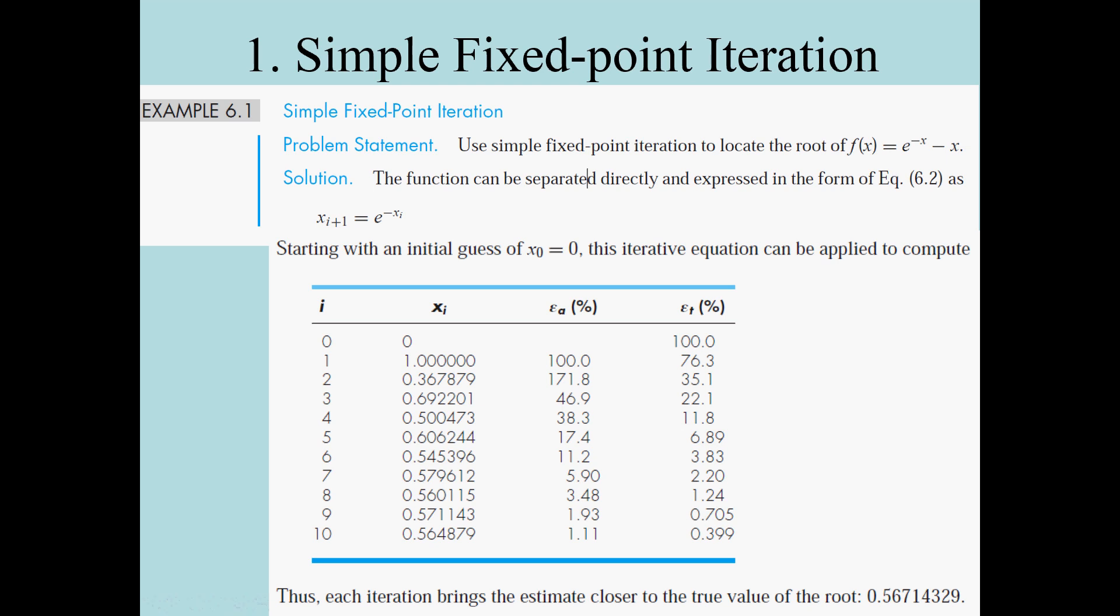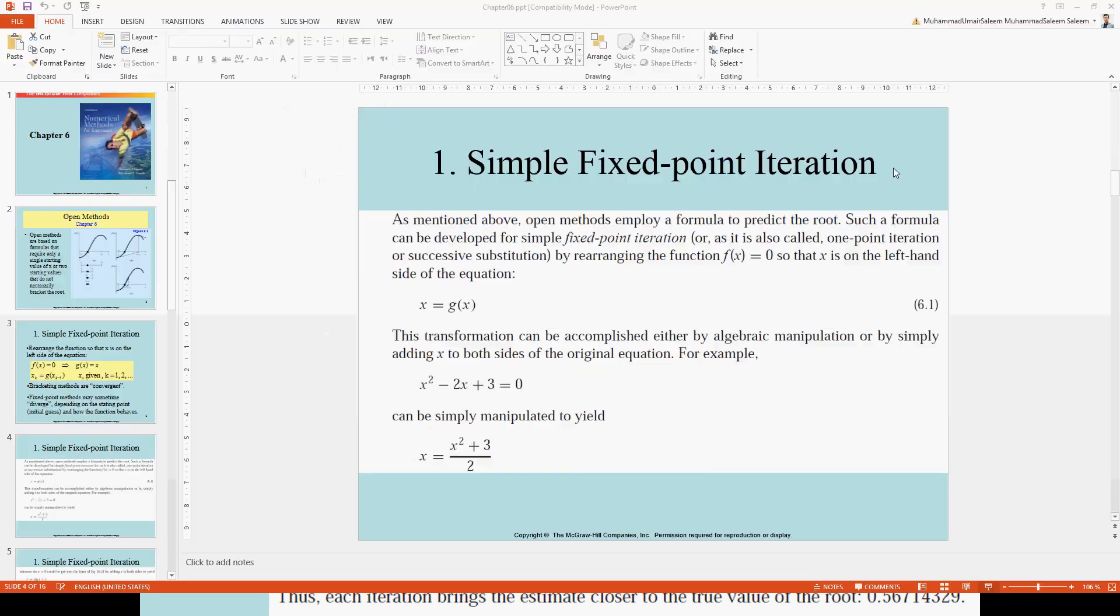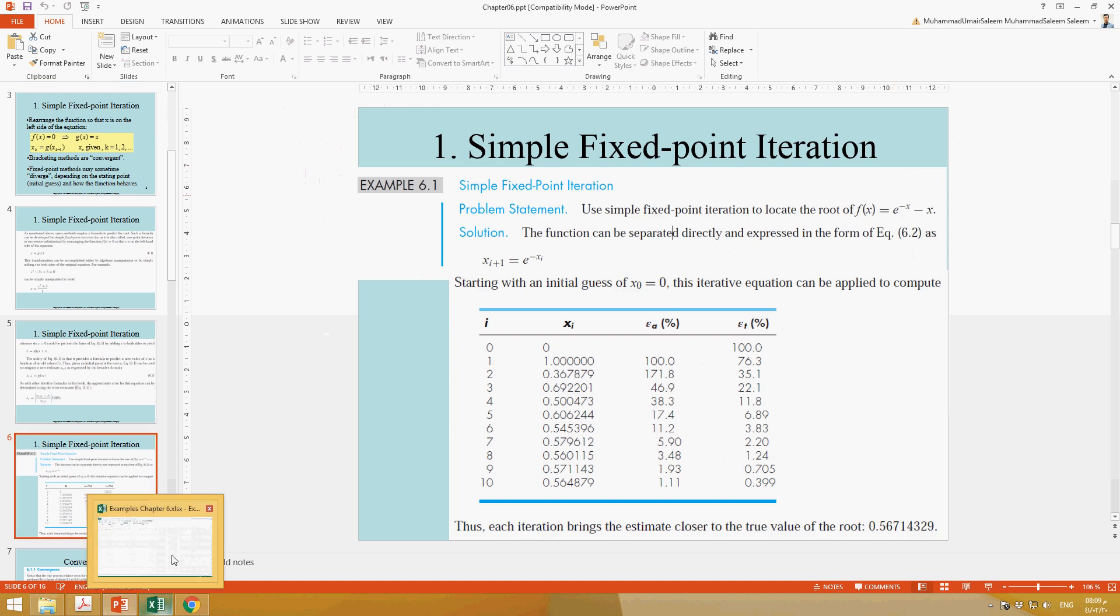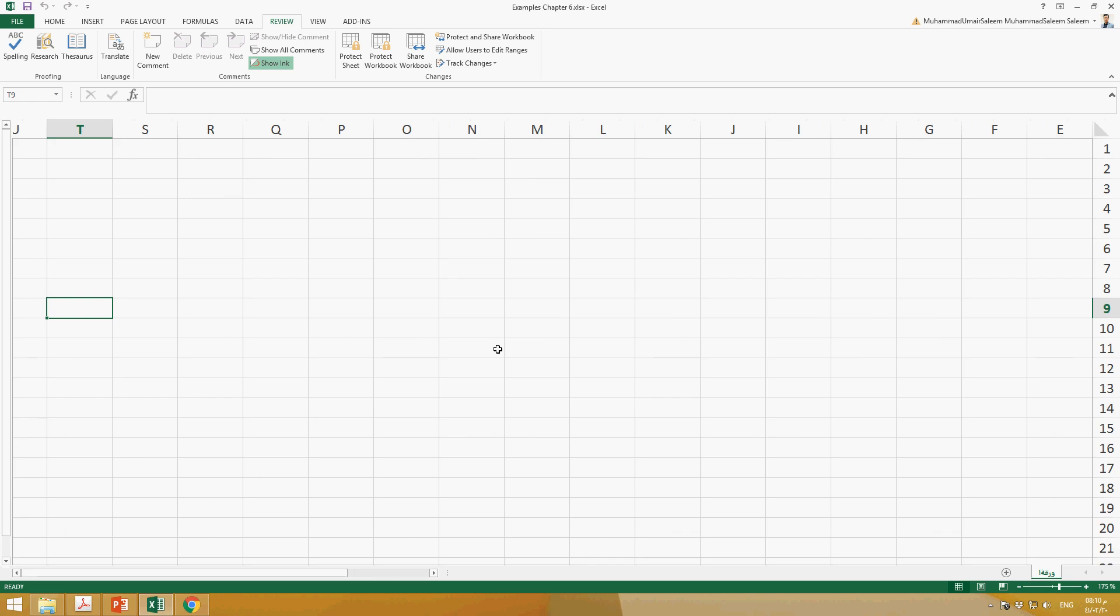In the question, we can assume some suitable value of x. Let's solve this problem in Microsoft Excel. We have f(x) is equal to e to the power minus x, minus x.